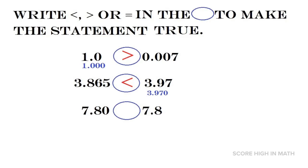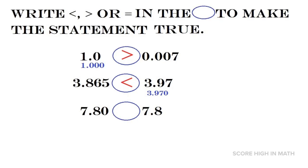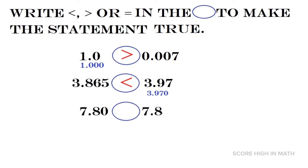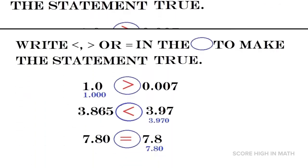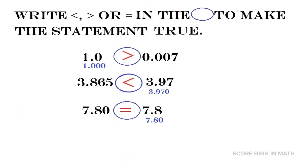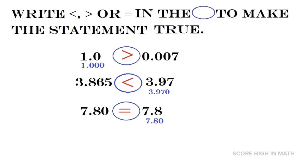Let us compare 7.80 with 7.8. If you are comparing two numbers and one number is missing a decimal place, it is automatically treated as zero. Therefore, 7.80 compared with 7.80 — the answer is equal, because 7.80 is the same as 7.8.